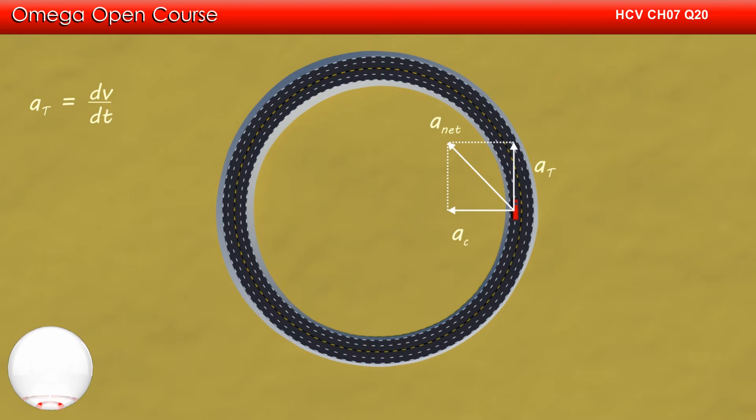The tangential acceleration is given by dv/dt, i.e., a. The centripetal acceleration is given by v²/R.